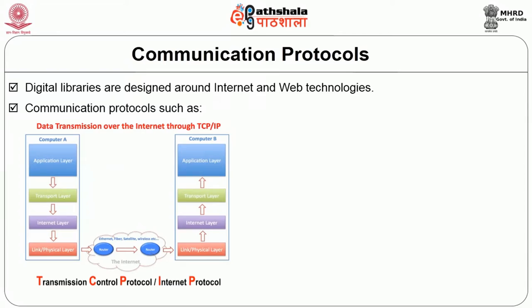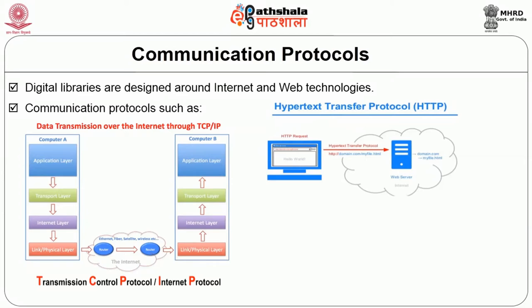TCP/IP is the basic protocol for communication — not just for digital libraries but for any data communicated over the internet. TCP/IP is not a single protocol; it is a suite of many protocols. It is named after the most prominent ones — TCP and IP — but also contains ICMP, RARP, and 100-plus other protocols glued together. For document sharing, we use HTTP — HyperText Transfer Protocol. You see this whenever a URL starts with HTTP colon slash slash followed by the website name.